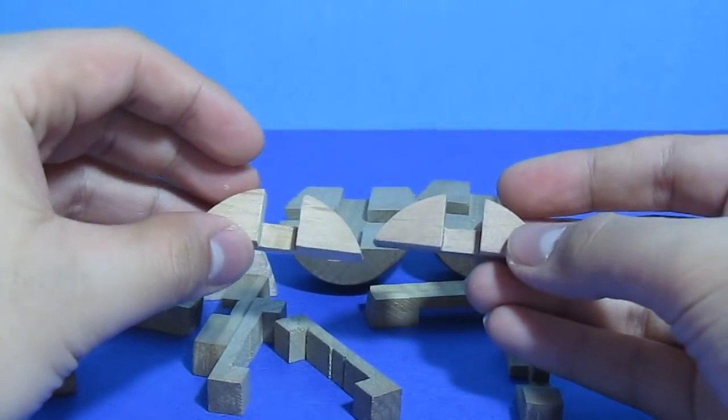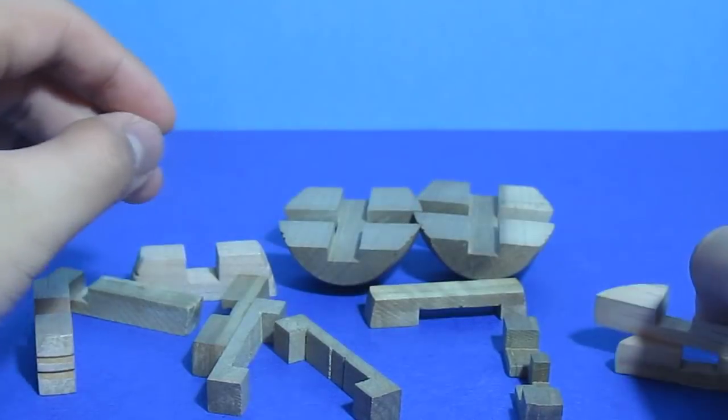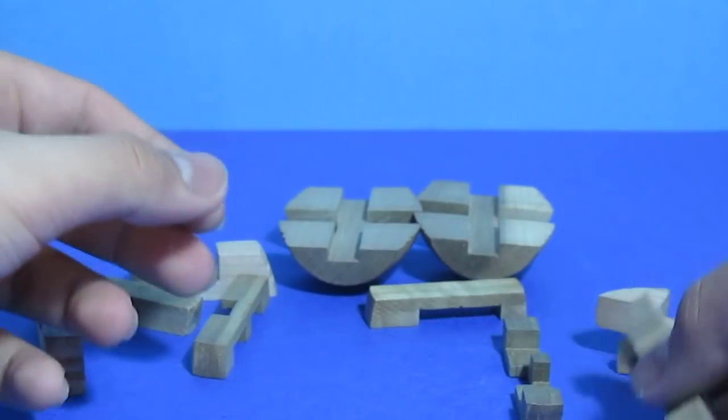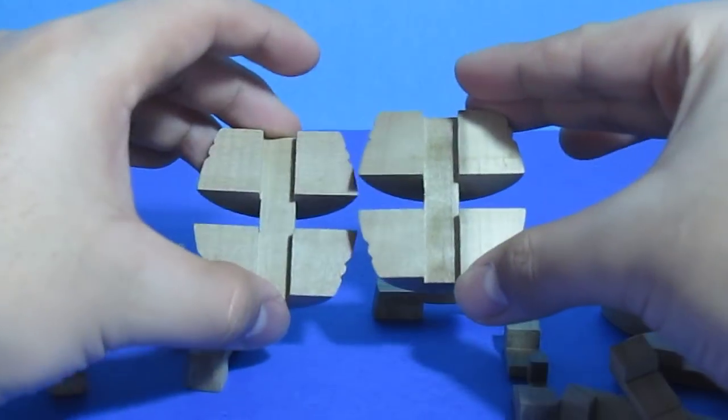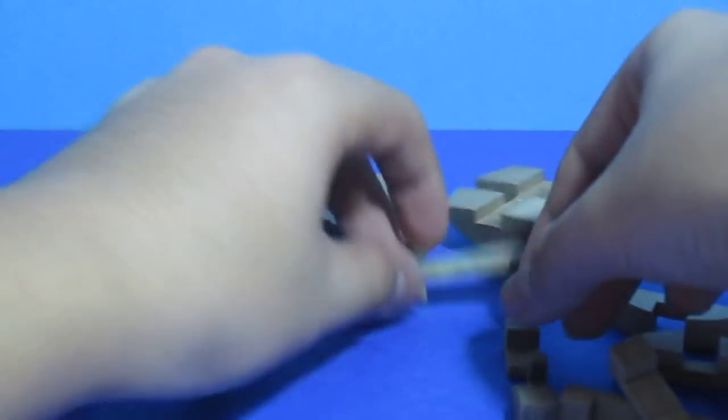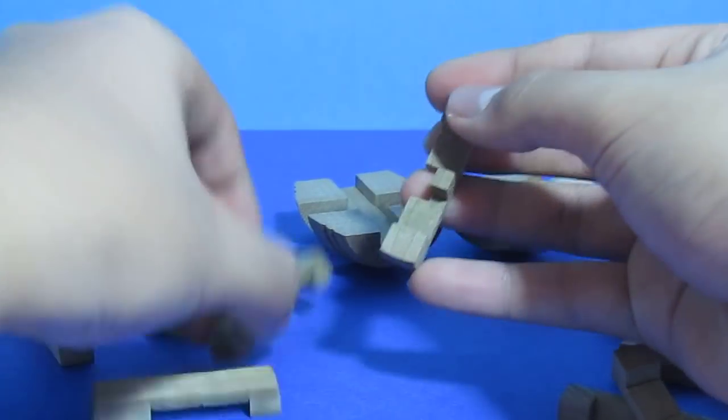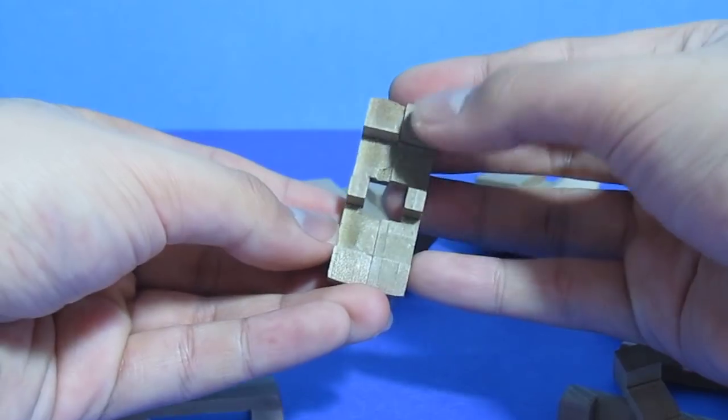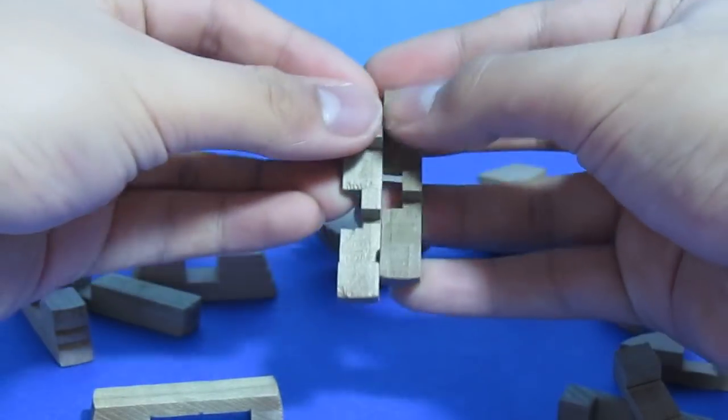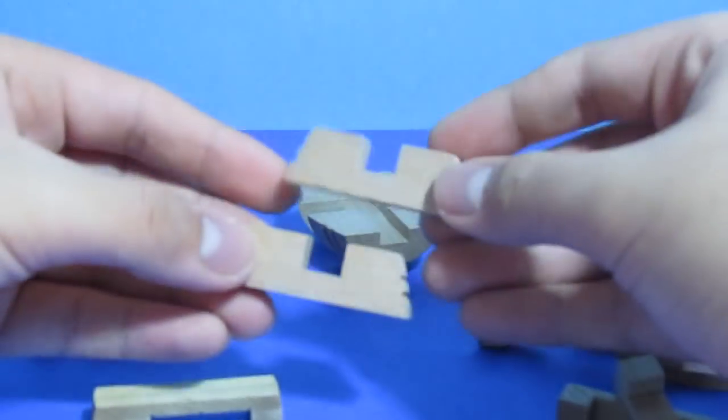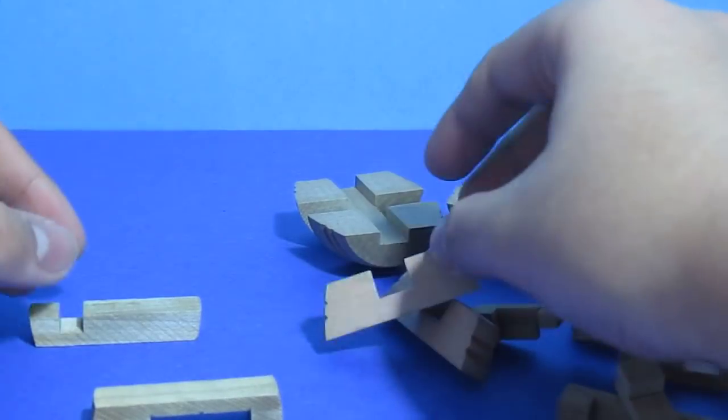So now you've got two identical of these pieces, two of these pieces, two of these pieces, and you'll have two of these pieces. And after that, you'll have two of these pieces. So all these pieces come in pairs.